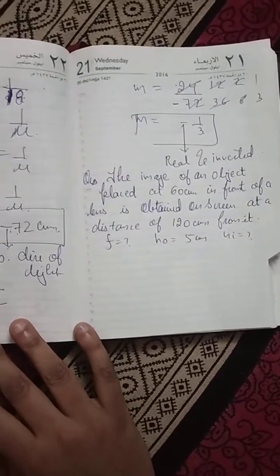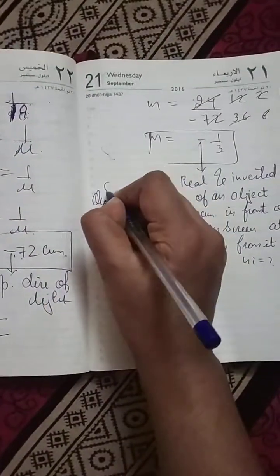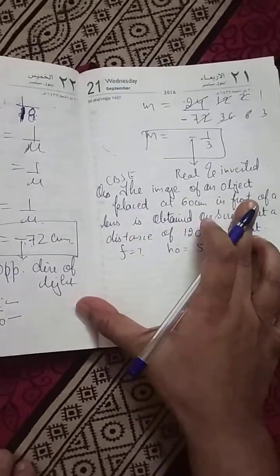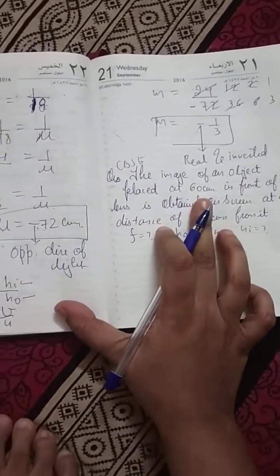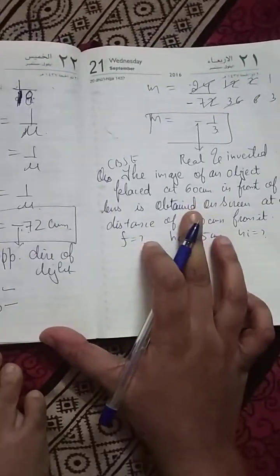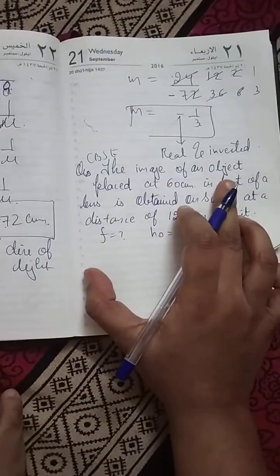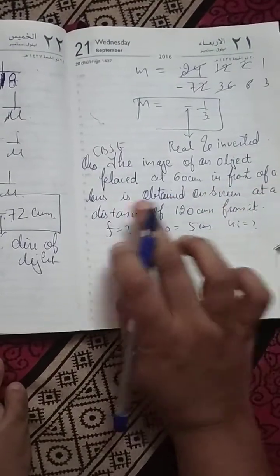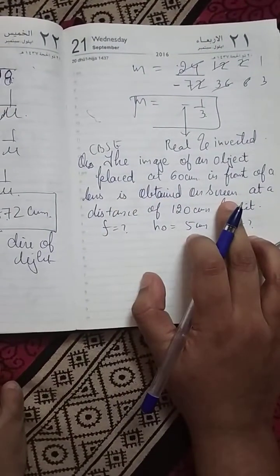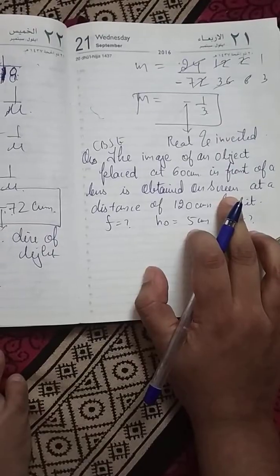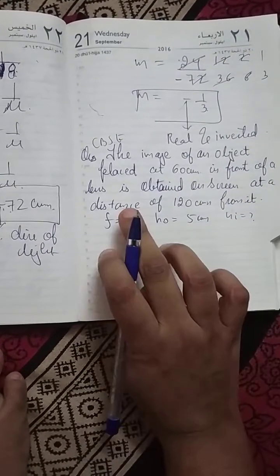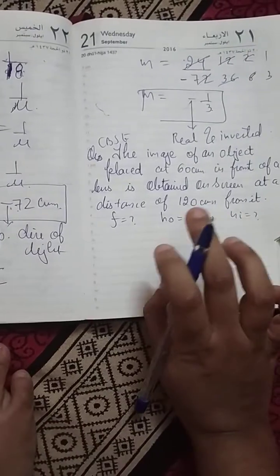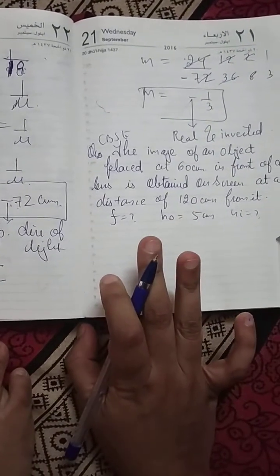Hello students, my name is Arwa and here is again a CBSE question. The image of an object placed at 60 cm in front of a lens is obtained on a screen at a distance of 120 cm from it. Find the focal length.